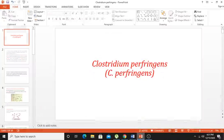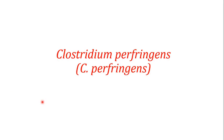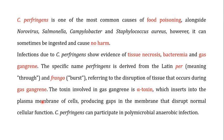Welcome back to this next video. In this video we are going to talk about Clostridium perfringens. Clostridium perfringens is one of the most common causes of food poisoning alongside norovirus, Salmonella, Campylobacter, and Staphylococcus aureus. However, sometimes the ingestion of Clostridium perfringens can cause no harm.